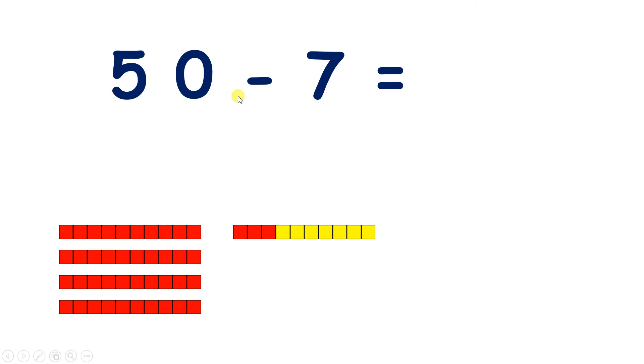So we can think of having 4 red lines of 10, and then a number bond to 10 made out of 7 yellows and 3 reds. So if we take away those 7 yellows, we have 4 tens and 3 units.